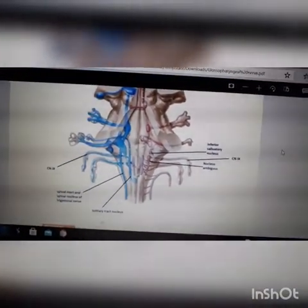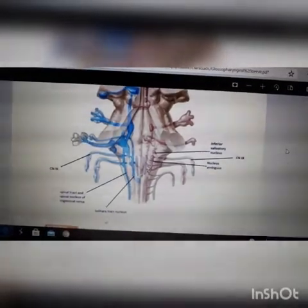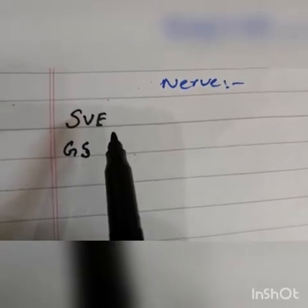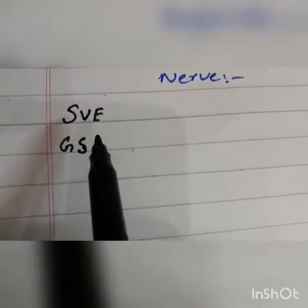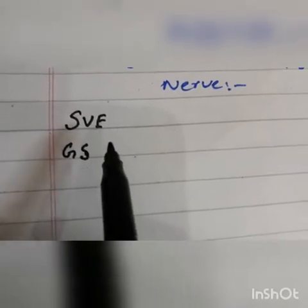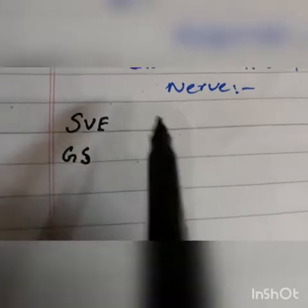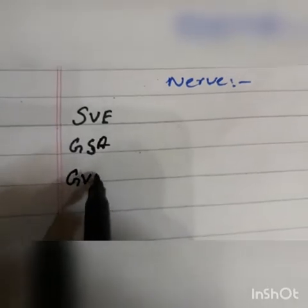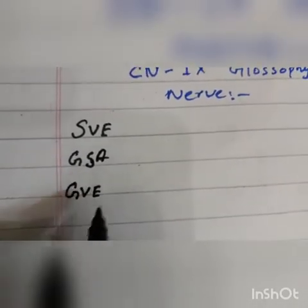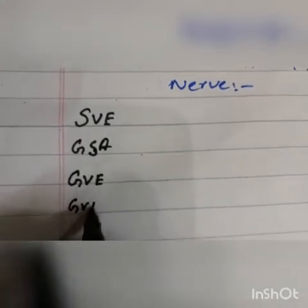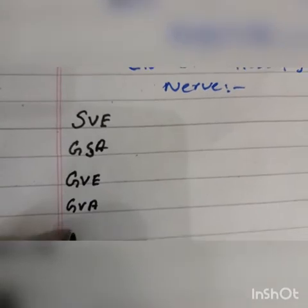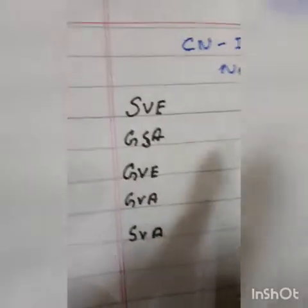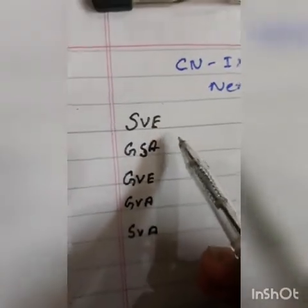Now we are discussing the brief theory of cranial nerve number nine. Whenever we discuss the glossopharyngeal nerve we must know the terminologies: somatic visceral efferent, general visceral efferent, general somatic efferent, and special visceral efferent. We must also know their functions in cranial nerve number nine.